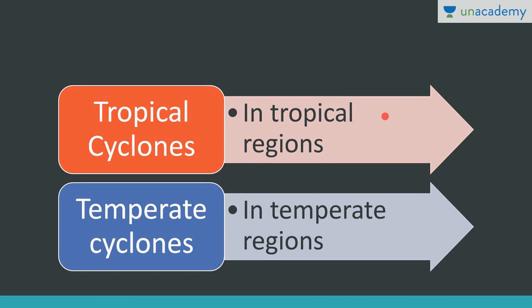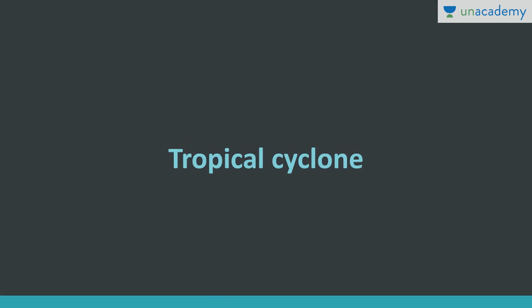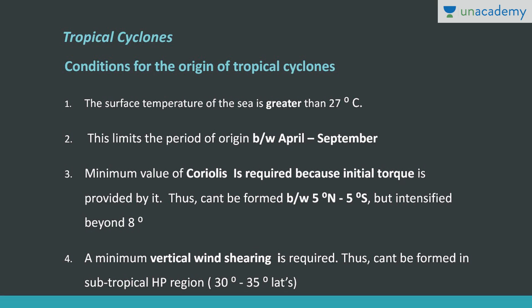There are two types of cyclones: tropical cyclones and temperate cyclones. Tropical cyclones occur in tropical regions and are known by different names such as cyclones, hurricanes, typhoons, etc. Temperate cyclones, also known as extra-tropical cyclones, are found in the temperate regions. Now let's discuss about tropical cyclones.